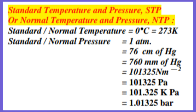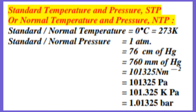This value of 101325 Newton per meter squared is again equivalent to 101325 Pascal, which is also the SI unit of pressure. This value can further be converted into kilopascal: 101.325 kilopascal, which is equivalent to 1.01325 bar.